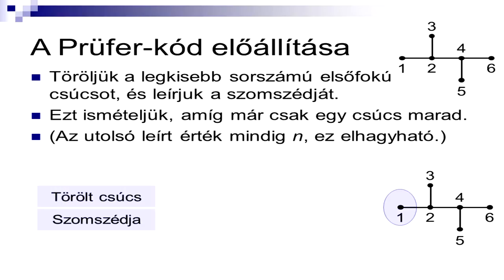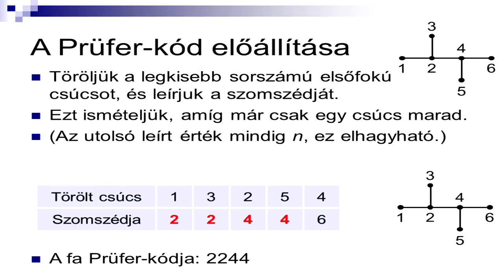Azért tettem ki két példányban a gráfot, mert az alsón fogom a törlést mutatni, és hogy a teljes gráfunk megmaradjon. Tehát első lépésben, legkisebb sorszámú elsőfokú pont az 1-es, őt letörlöm, 2-es volt a szomszédja. Igazából csak a szomszéd fontos ebből, tehát ez a piros 2-es, csak a követhetőség érdekében a törölt csúcsot is leírjuk. Utána a 3-as, a legkisebb sorszámú, ő szomszédja a 2-es, ismét. Aztán a 2-es lesz elsőfokú, 4-es volt a szomszédja, 5-ösnek a szomszédja a 4-es, 4-esnek a 6-os. Ez az a bizonyos állítás, hogy a végén mindig 6 csúcsú fánál mindig egy 6-ost kapok. Ennek a 6 csúcsú fának 2-2-4-4 a Prüfer kódja. Ez látszik, hogy ez egy egyértelmű módszer, tehát minden fához egyértelműen tartozik egy Prüfer kód.